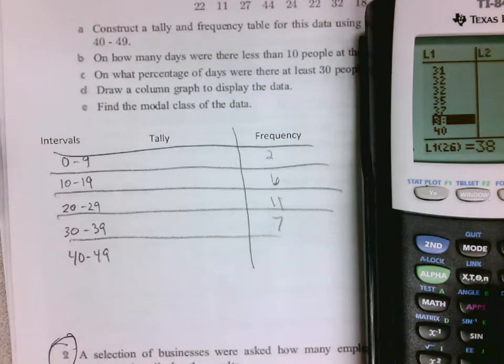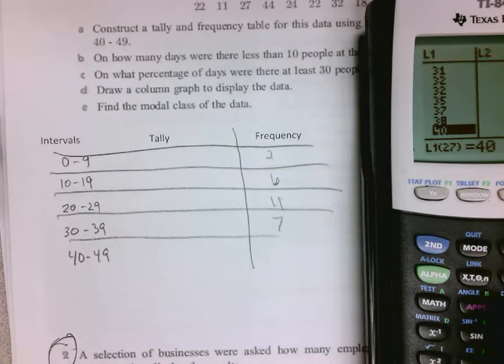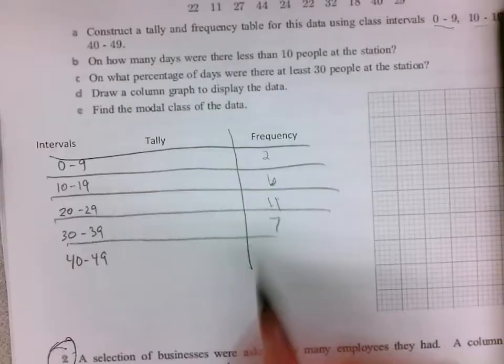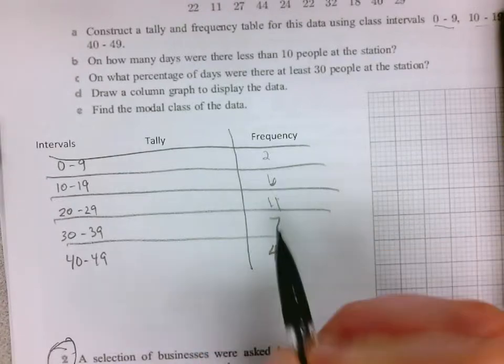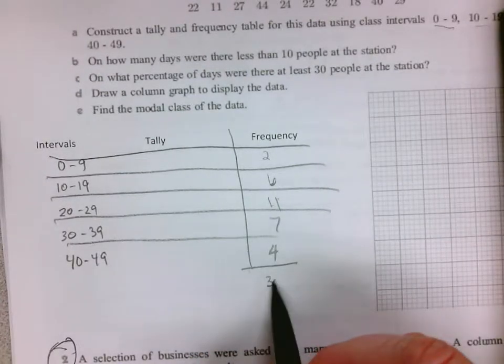So 40 has 1, 2, 3, 4, 5—so 4. If you add up your totals, you should get back to 30: 8, 19, 26, 30. So there's my total of 30. That's just a way a calculator can help you.